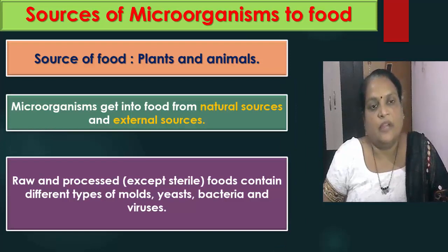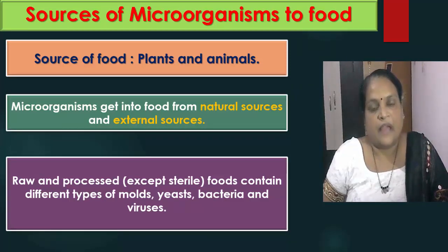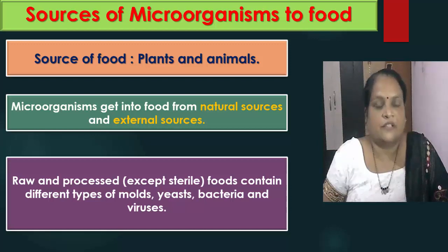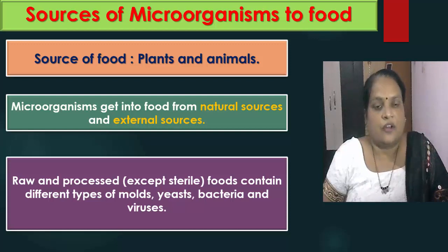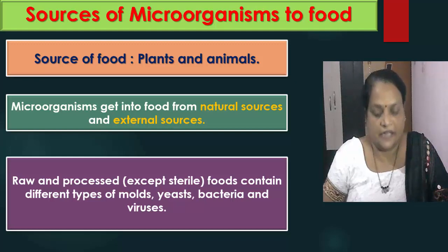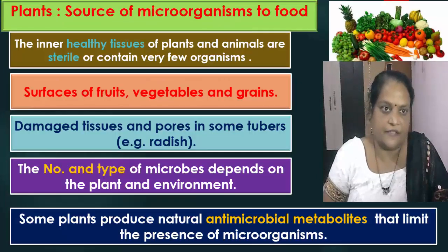Our food mainly constitutes plants and animals. Microorganisms get into the food from natural sources and from external sources. Raw and processed foods contain different types of molds, yeasts, bacteria and viruses.